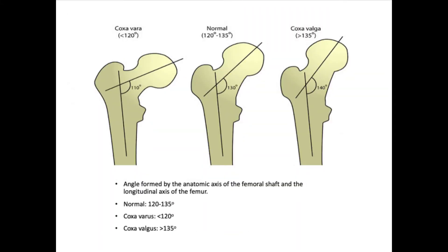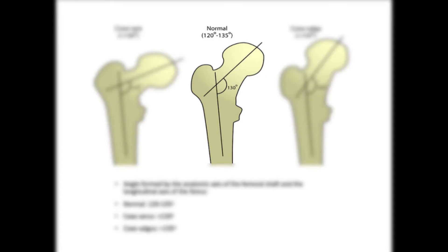Let's start with the angle of inclination at the hips. We're going to draw an imaginary angle formed by the anatomic axis of the femoral shaft and the longitudinal axis of the femur. If the angle is between 120 to 135 degrees, that is a normal angle of inclination.